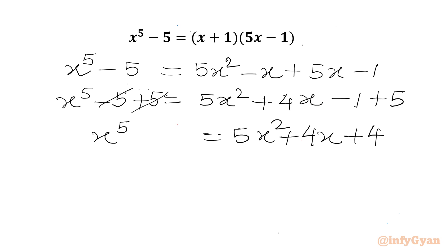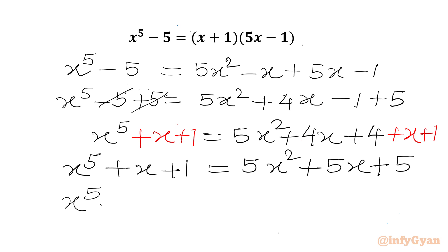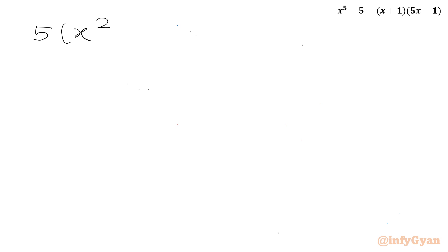Now I will add (x plus 1) to both sides. So our equation becomes x to the power 5 plus x plus 1 equals 5x squared plus 5x plus 5. We can take 5 as common from the RHS, so we write x to the power 5 plus x plus 1 equals 5 times (x squared plus x plus 1).